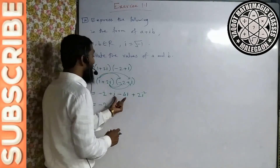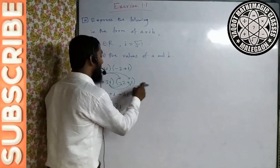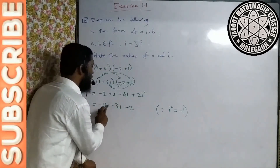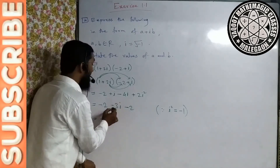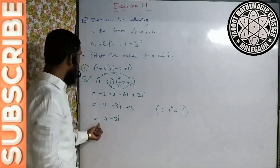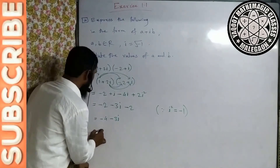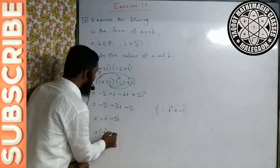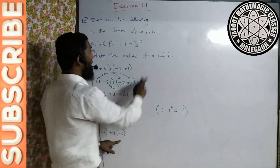So we have: −2 + i − 4i + 2i². Now 2i² = 2 × (−1) = −2, since i square is minus 1. So: −2 + i − 4i − 2. Combining real parts: −2 − 2 = −4. Combining imaginary parts: i − 4i = −3i. So result is −4 − 3i. a plus ib form ban gaya.